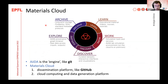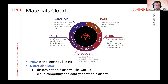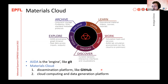Materials Cloud consists of five sections: Learn, Work, Discover, Explore, and Archive. I want to make an analogy: AiiDA is like Git and Materials Cloud is like GitHub. Git stores your source code on your local computer; similarly, AiiDA stores your graph database and materials science calculations locally. Then, just as you upload source code to GitHub, with AiiDA you upload your graph database and calculations to Materials Cloud. Other people can then download and import it into their local AiiDA environment and potentially add to the data.